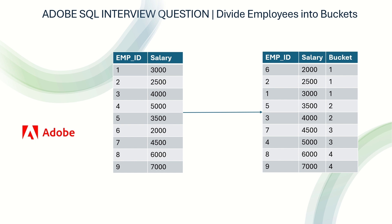For the first three salaries — the least salaries — they are in bucket one. The next two salaries are in bucket two, the next two in bucket three, and the next two in bucket four. Bucket four contains the employees with the highest salaries. That is the question.